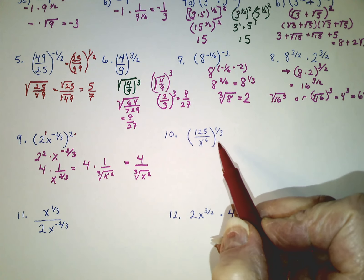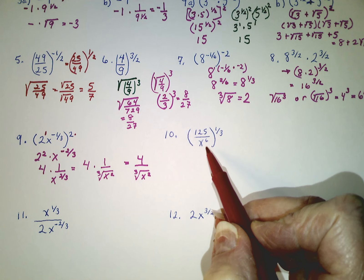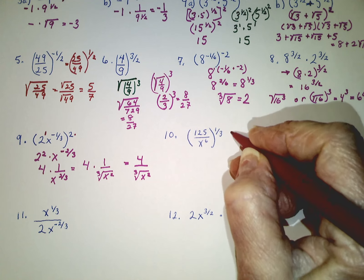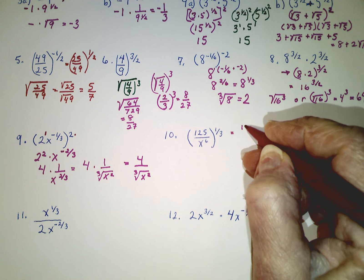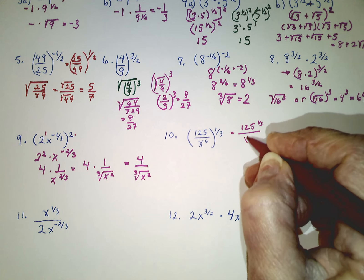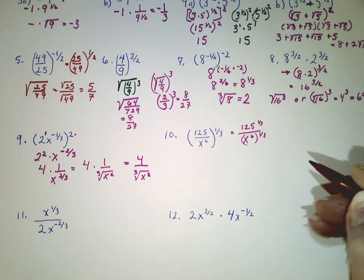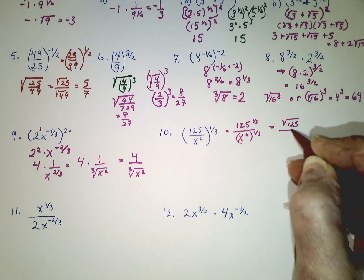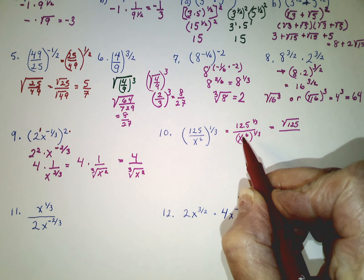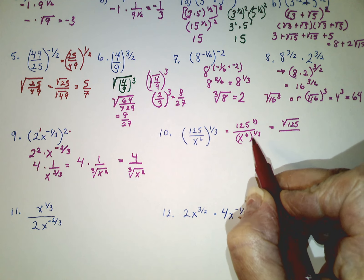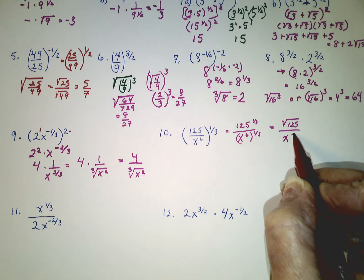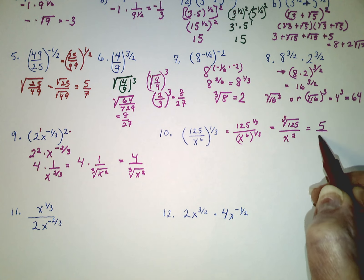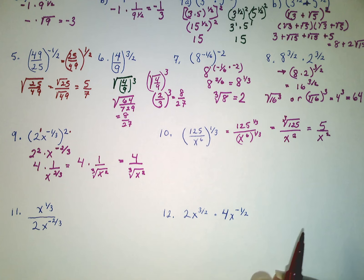This one isn't as bad as it looks. We have a division problem, so we can raise each part to the one-third. Apply the power to both the numerator and the denominator: 125 to the one-third, and x to the sixth to the one-third. That's the cube root of 125, and then 6 times one-third gives x to the second. The cube root of 125 is 5. So the simplest form of the answer is 5 over x squared.